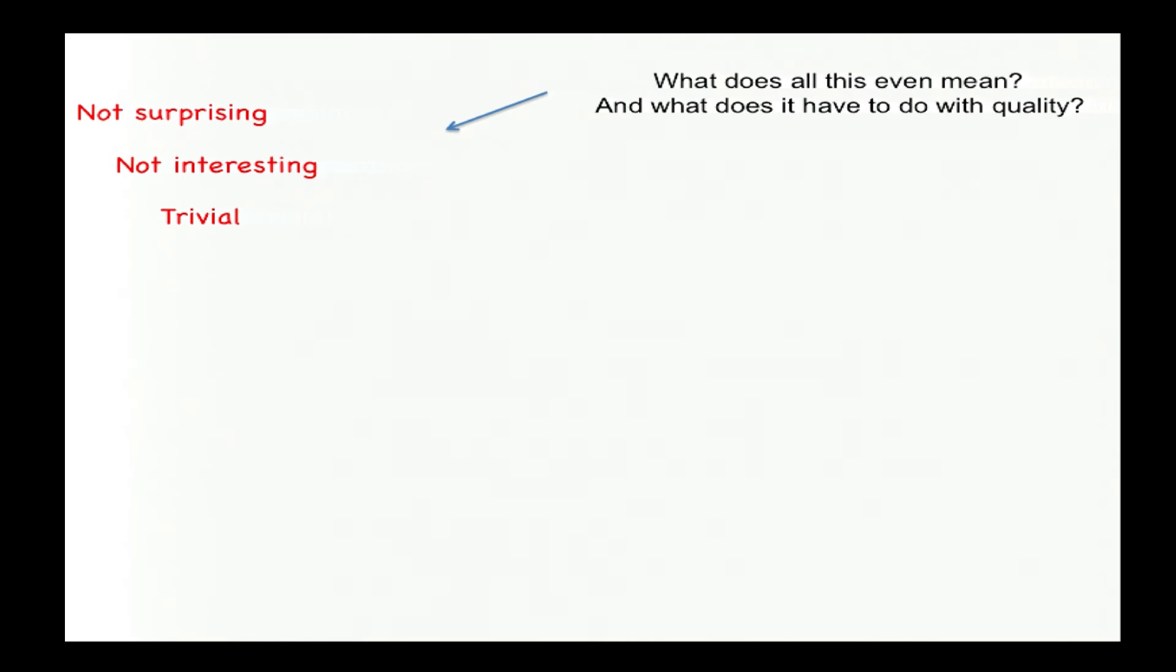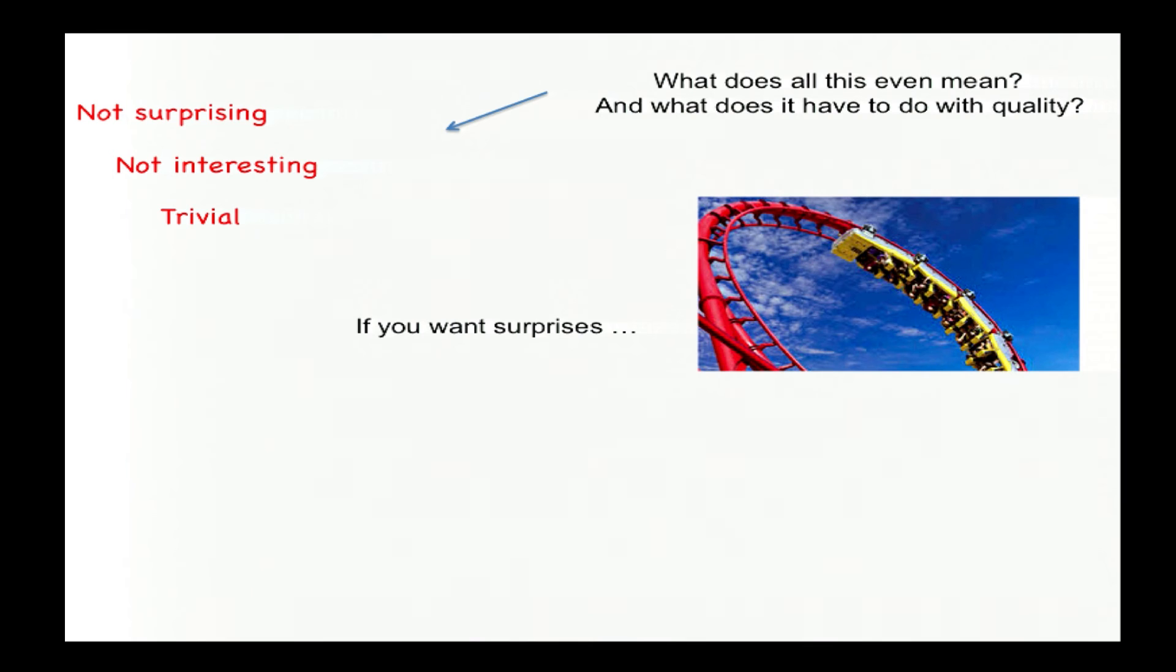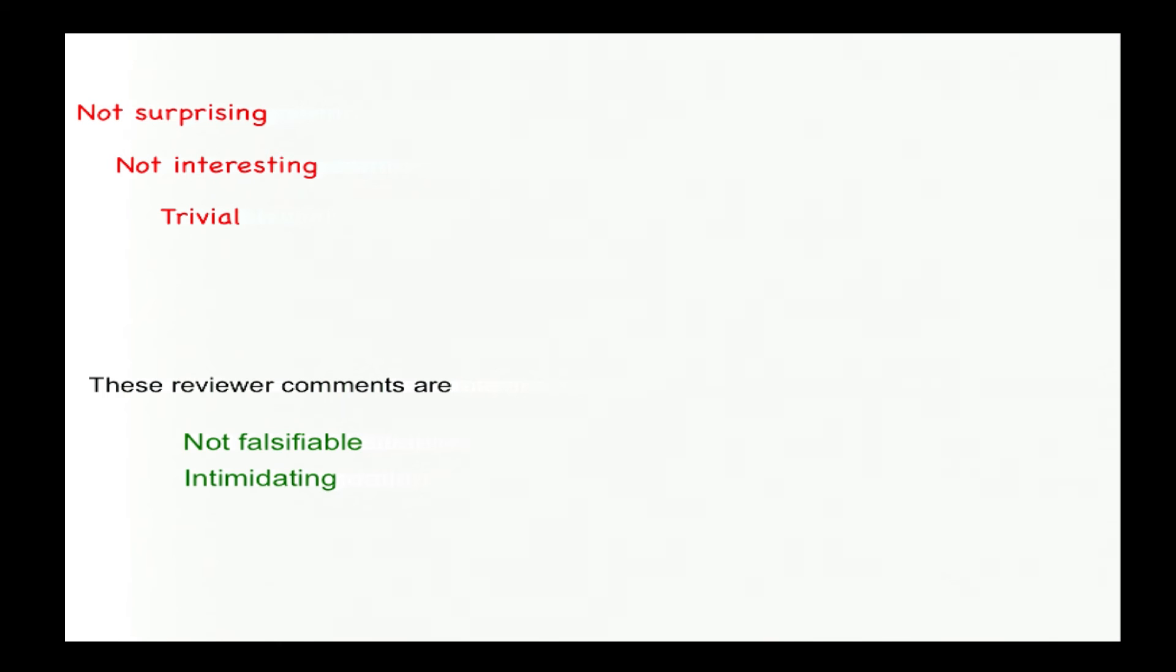Another broad issue is the content of reviews, in particular the presence of terms like these. Surely you've seen them. The paper is not surprising. It's trivial. And as a start, I have trouble even understanding what they mean or what they have to do with the quality we're trying to evaluate. I feel like telling the reviewer if they want surprises, they should go ride a roller coaster or read a mystery novel rather than review papers. But more important is the position in which these types of comments place other reviewers or even authors who want to rebut them. We speak in our community of assumptions that are not falsifiable, meaning hard to disprove. Well, these comments are kind of the same. If someone has decided not to be surprised or interested, there isn't really much that's going to change it. And the result is that these kinds of comments are intimidating and hard to dislodge. There ought to be some kind of rules that comments have to be falsifiable.